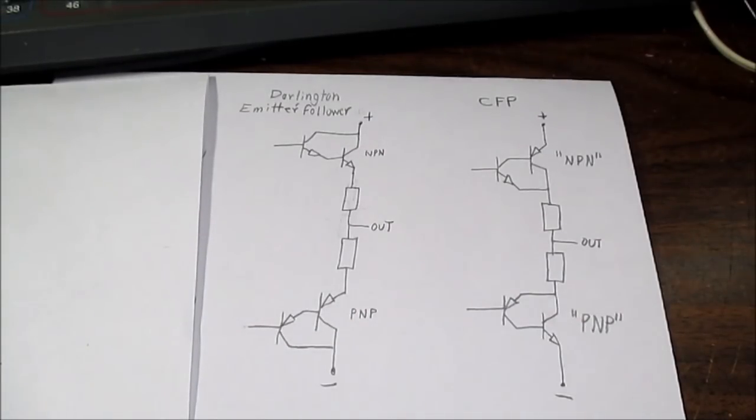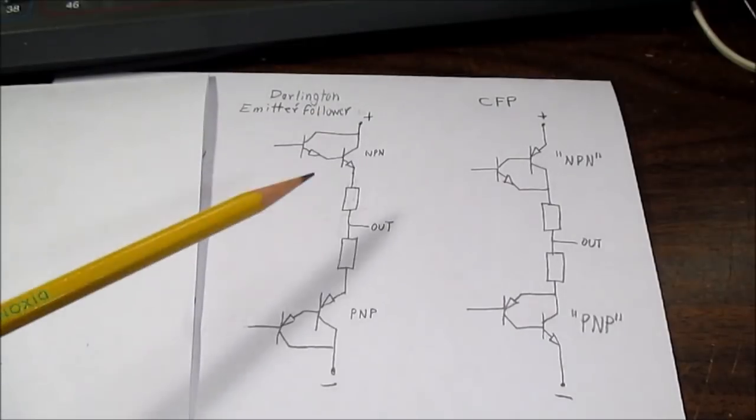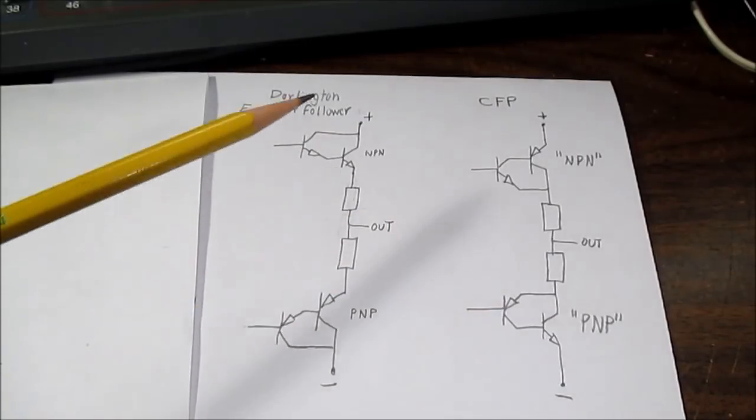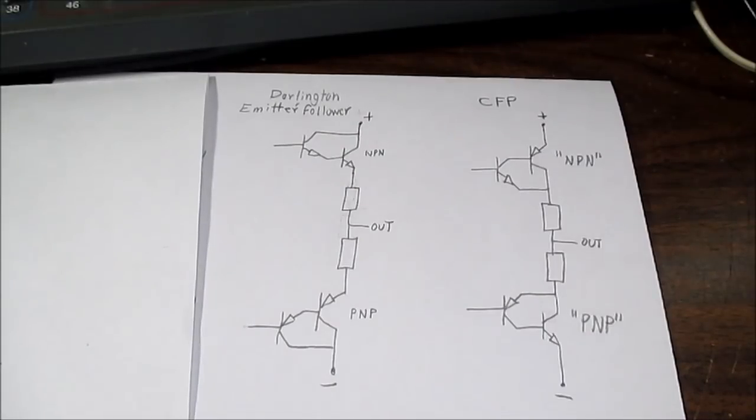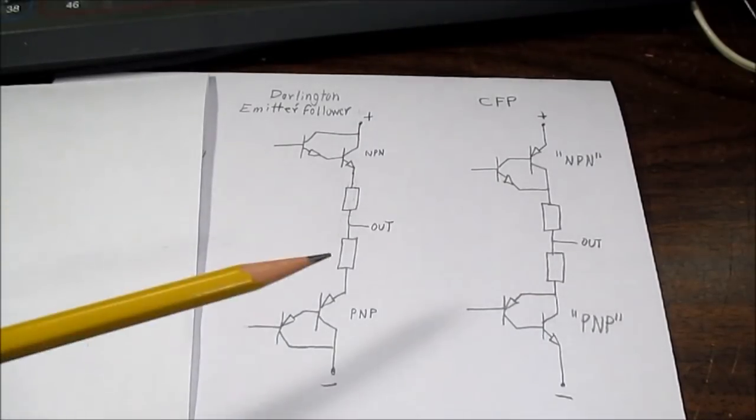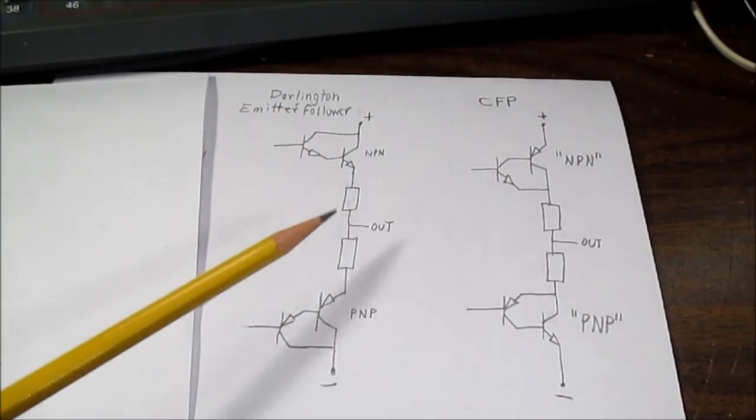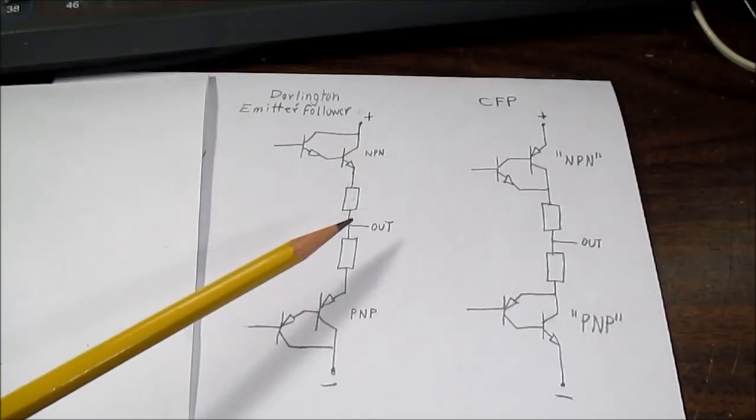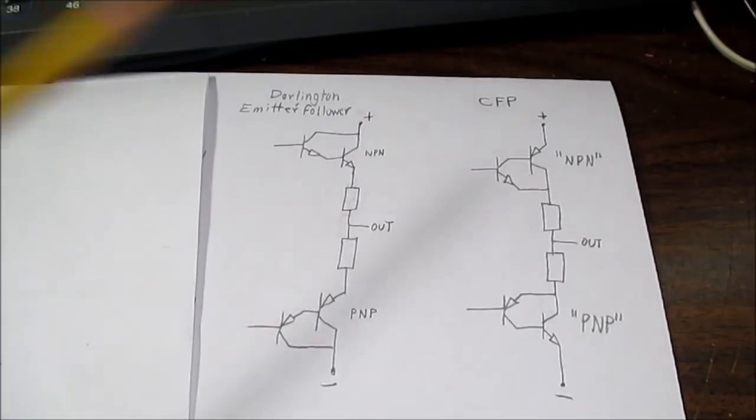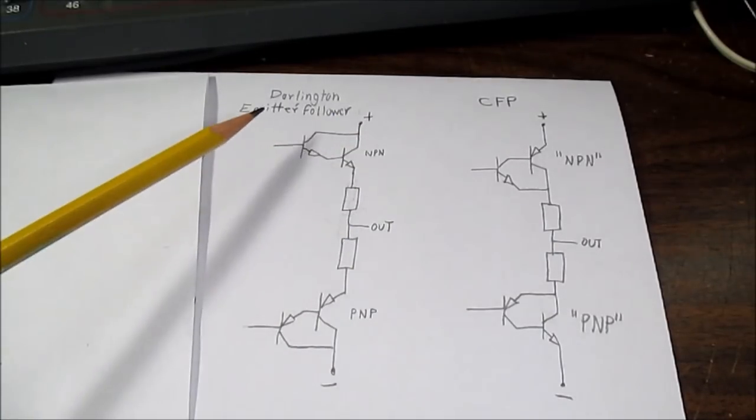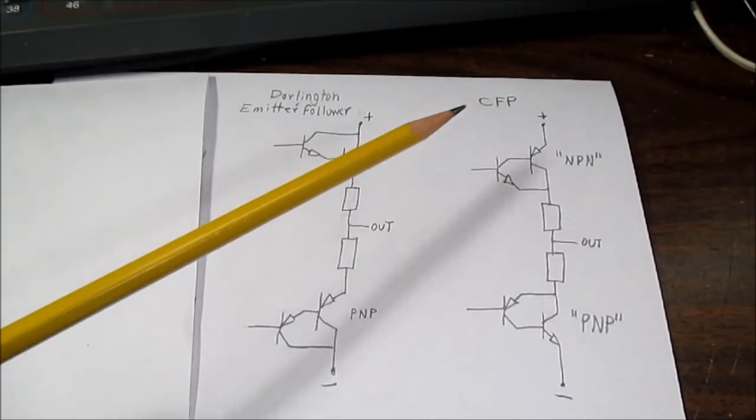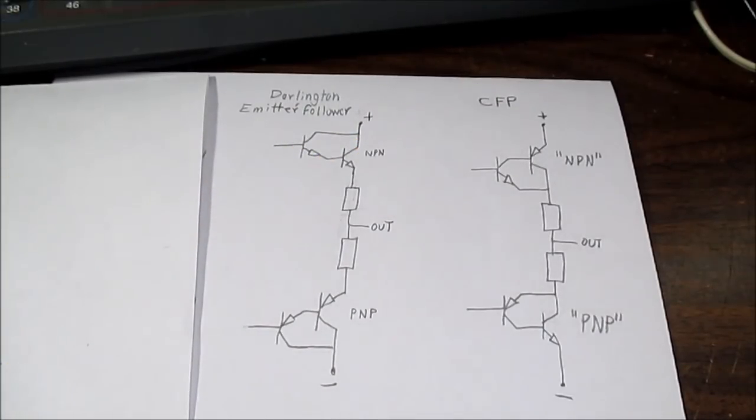It would be nice at some future point to investigate both of these circuits, and see how they perform. You know, I might have to have some better equipment to be able to measure distortion levels down to very low values. But again, in either case, very, very nice amplifiers have been made using either the Darlington emitter follower or the CFP type output stages.